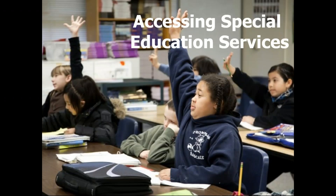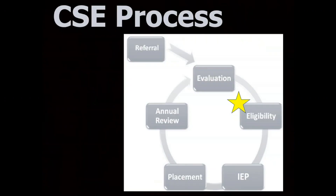How do you access supports and services? Phone calls, emails, and meetings with teachers and principals do not always result in special education services. What is needed is a written referral. Here's a quick review of the process: First, you start with a referral to the Committee on Special Education, which can be done by a parent or school staff. Then, evaluations are done to determine how the student is currently functioning. Eligibility is determined at the CSE meeting. To be eligible for special education, a student must be classified under one of the 13 disability categories. An IEP is developed, and then they look at placement — where the supports and services will be delivered.